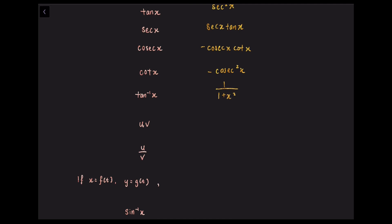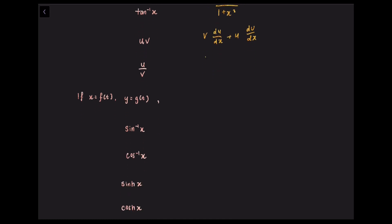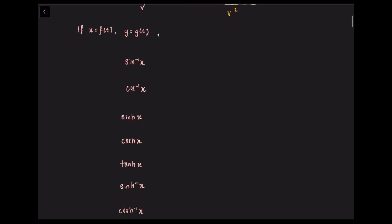Differentiating uv using the product rule, we will have v times du/dx plus u times dv/dx. To differentiate u over v using the quotient rule, we get v times du/dx minus u times dv/dx, all over v squared. If we have a parametric equation x equals f(t), y equals g(t), then by the chain rule, dy/dx equals dy/dt divided by dx/dt.